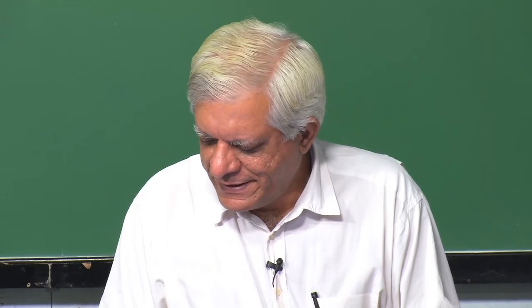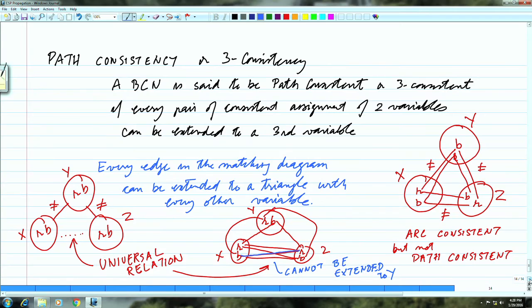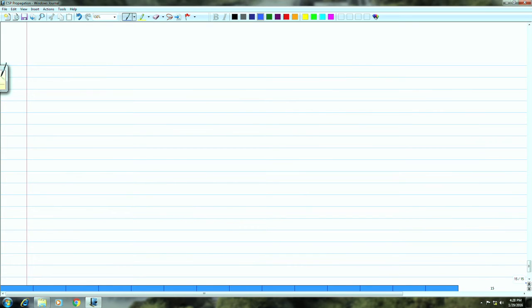That is what path consistency is all about. The interesting thing about path consistency is that it changes the constraint graph — where there was no edge in the constraint graph, it adds an edge.